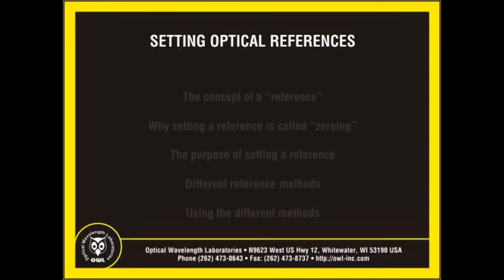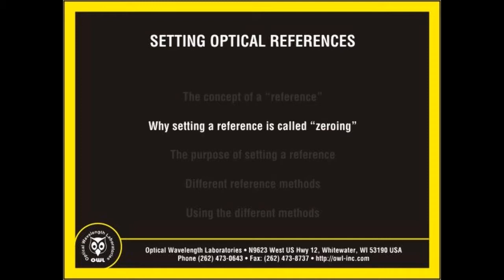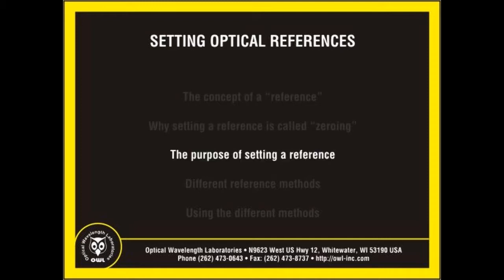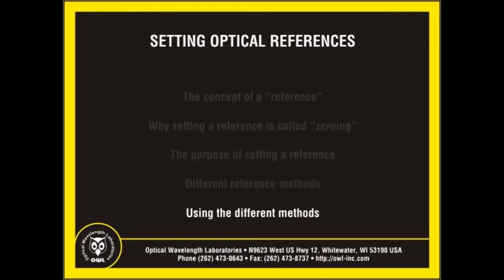One of the most basic and fundamental procedures of testing fiber optic links is setting an optical reference, also called zeroing. Most technicians realize that zeroing is a necessary part of optical loss testing, yet many do not understand exactly what zeroing is or why they need to set a reference. This video will cover the concept of a reference, why setting a reference is typically called zeroing, the purpose of setting a reference, the different methods used to set a reference, and using these reference methods in common link configurations.